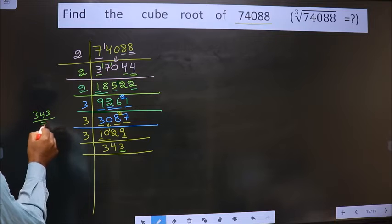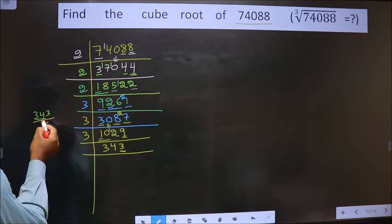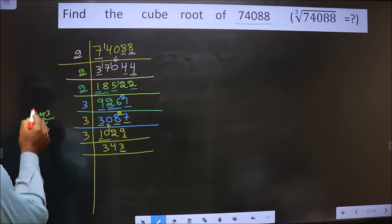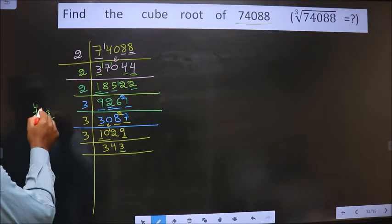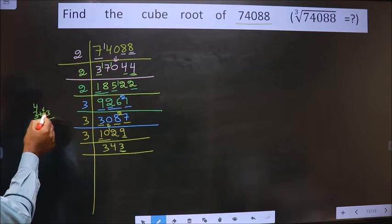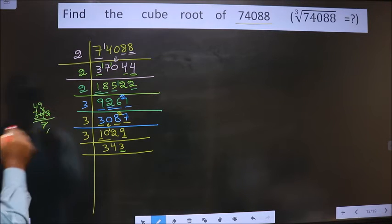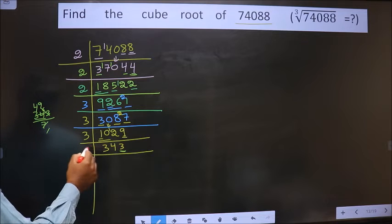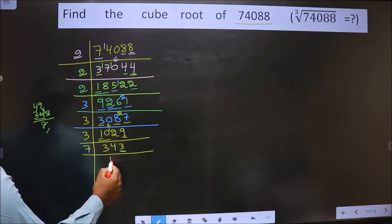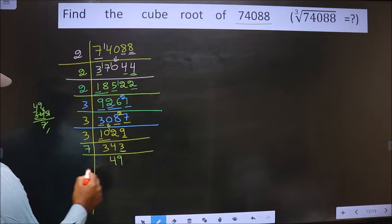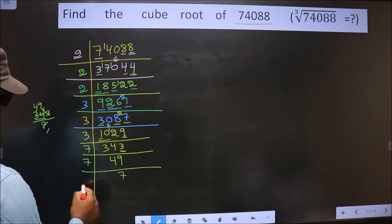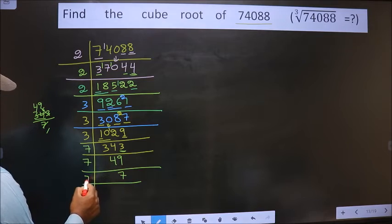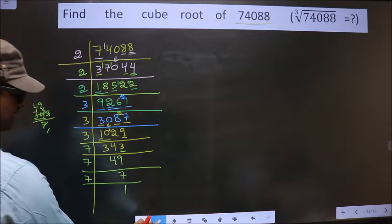We divide 343 by 7. We have 34; the closest to 34 in the 7-times table is 7×4=28. 34 minus 28 is 6, carried forward making it 63. 7×9=63. So this number is divisible by 7. 7×49=343, and 49 is 7×7. So 7 is the prime number; we take 7×1=7.